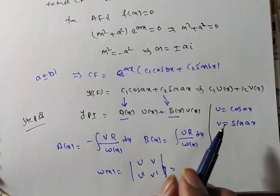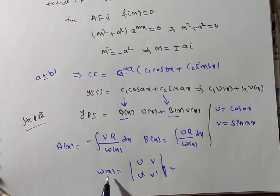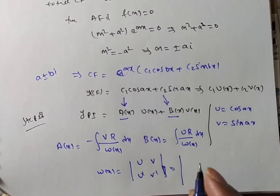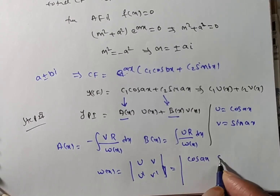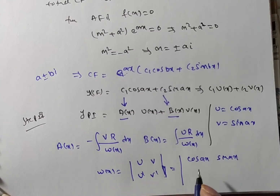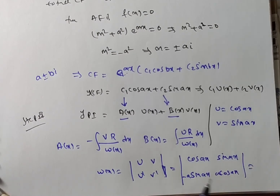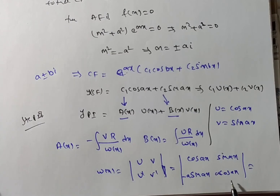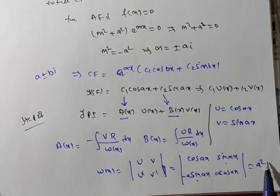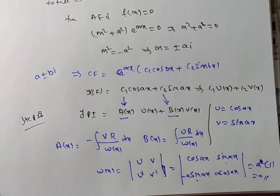Since u and v are linearly independent solutions, the Wronskian is non-zero. We have u = cos(ax), v = sin(ax), u' = −a·sin(ax), v' = a·cos(ax). Computing the determinant: cos(ax)·(a·cos(ax)) − sin(ax)·(−a·sin(ax)) = a·cos²(ax) + a·sin²(ax) = a·(cos²(ax) + sin²(ax)) = a. So W(x) = a, which is non-zero.